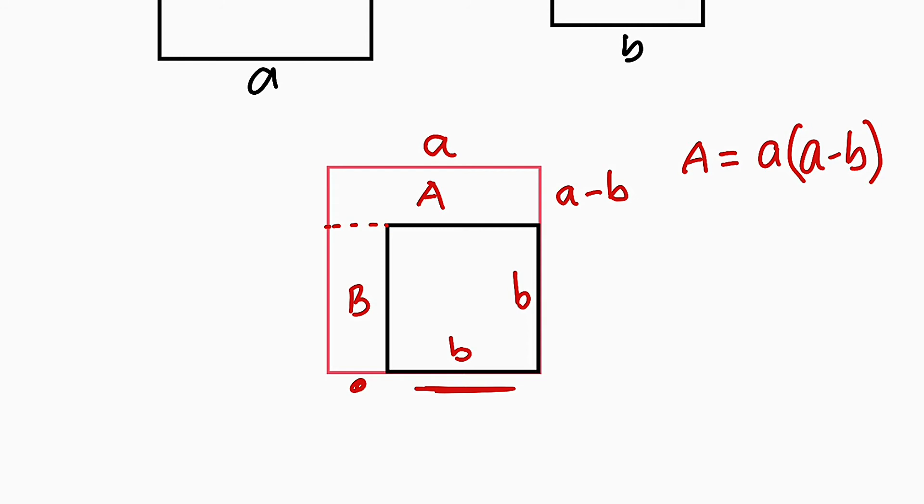So this is a minus b. And from this point down here, remember, is the length of the small square b, so this is b. Therefore, to compute the area of B, we say that this is equal to b multiply by a minus b. And the total area not covered by b will be equal to the area of A plus the area of B.